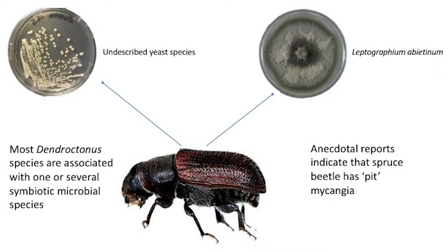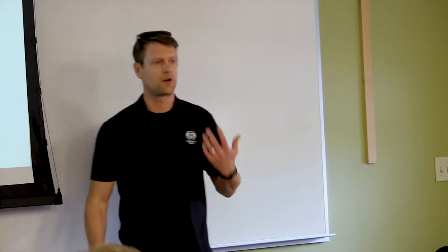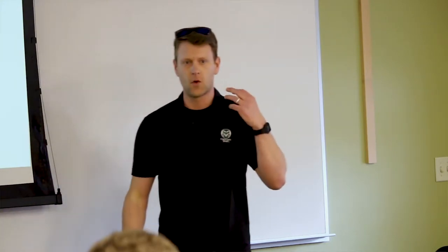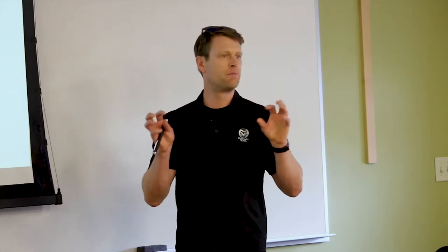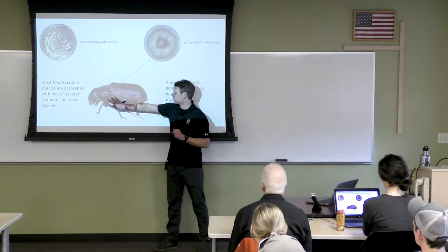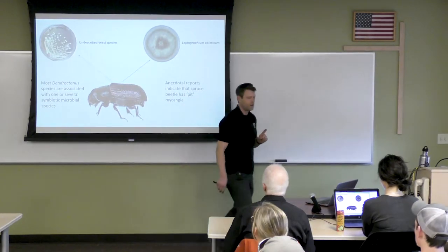Most dendroctonus species are associated with one or several species of fungi in a tightly linked co-evolutionary relationship. Many beetles have developed specialized structures that secrete particular enzymes that proliferate the growth of some of these fungi within the beetle body, and when laying eggs in host trees they deposit these fungi everywhere. There were several anecdotal reports in the literature that spruce beetle had what's called a pit mycangia — typically a structure on the thorax or in the mouth parts that oozes fungal spores when beetles are chewing on their hosts. It was thought that on the spruce beetle this structure was on the thorax or wing casing.